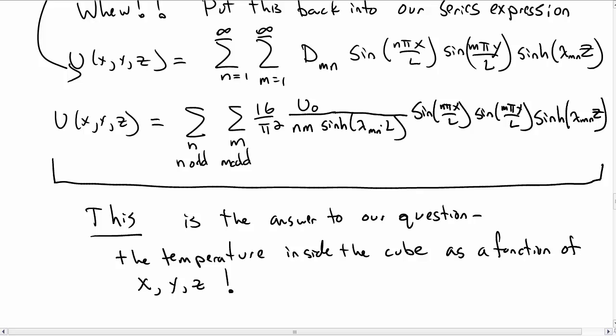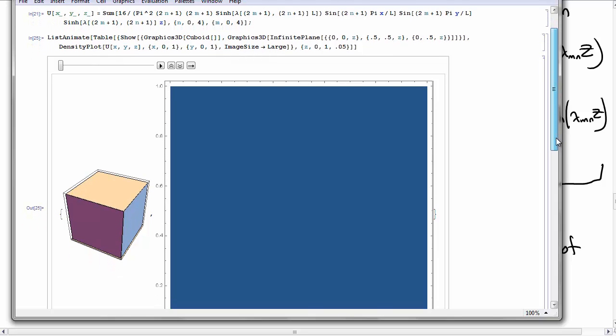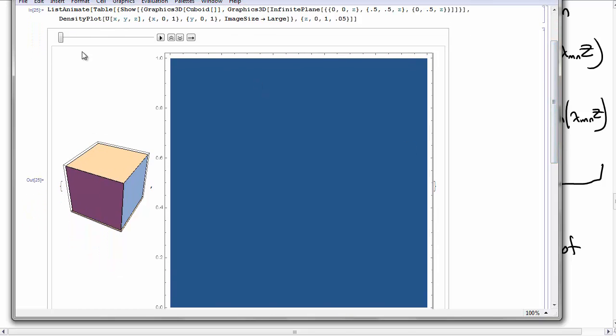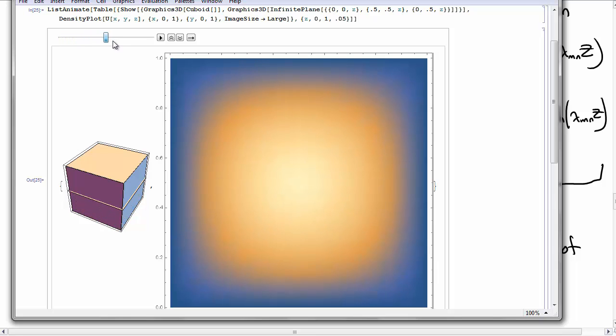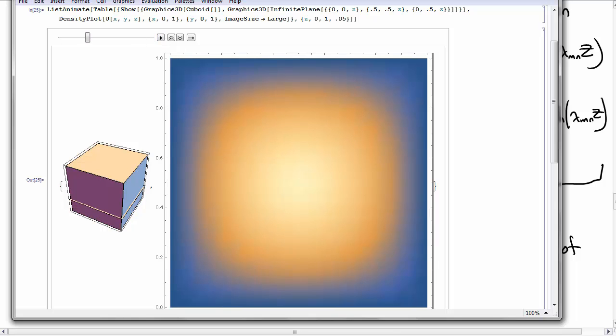What I'm going to do is plot this on Mathematica for various slices. Here I've just written that double sum into Mathematica and we're going to make a density plot of the temperature as a function of different slices through the cube. As I choose this slider, I'm choosing different slices along the cube. As I get closer to the top the temperature becomes u_0, it becomes hotter. When I go down to the bottom of the cube it's zero. In between the cube, as I get closer to the top the temperature increases. It looks like the higher temperature penetrates into the middle of the cube, but the outside sides of the cube stay at zero because those were our boundary conditions. That's one way to try and understand what the solution actually looks like.